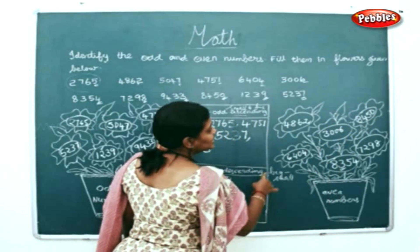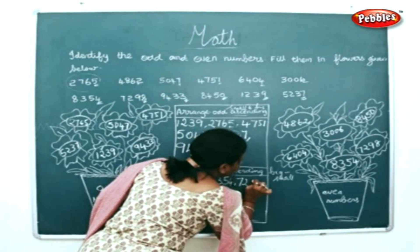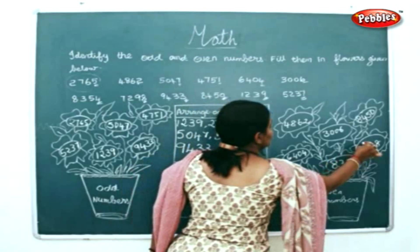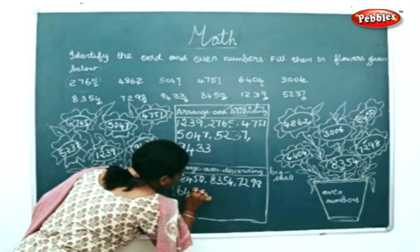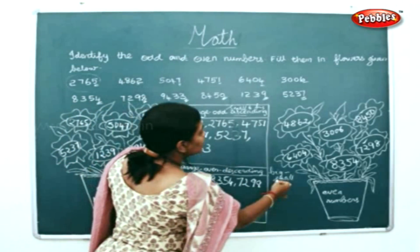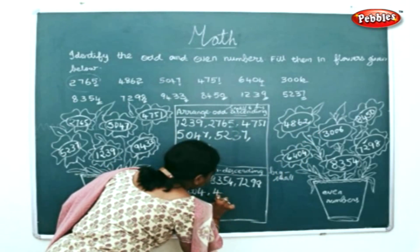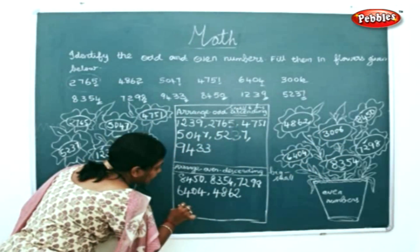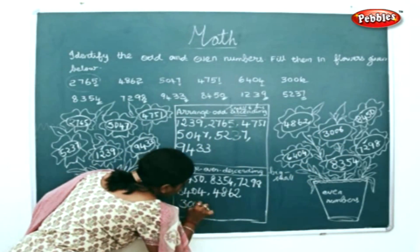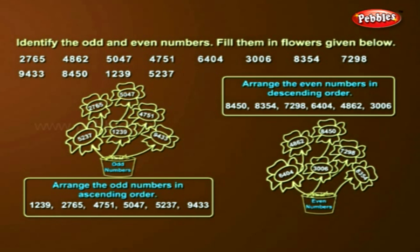The next will be 7298. Then 6404. Then 4862. The least number here is 3006.